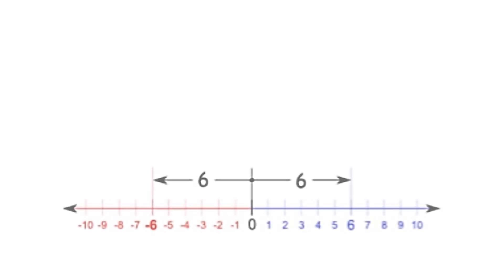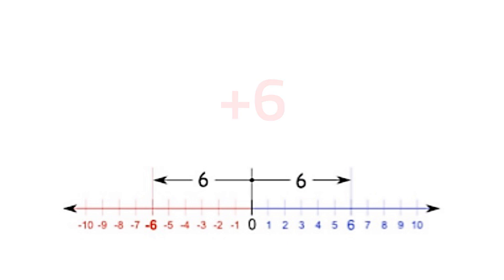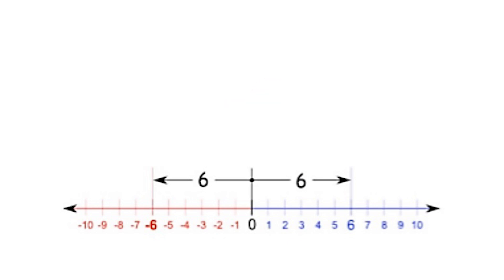Before we move on with the fundamental operations involving integers, let's recall the absolute value first. The absolute value of an integer is the distance from 0 on the number line. The absolute value of positive 6 is 6, and the absolute value of negative 6 is also 6. Thus, opposite integers have the same absolute value.